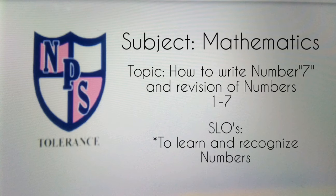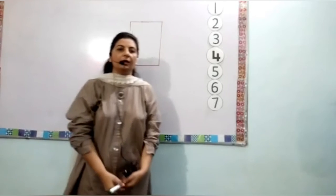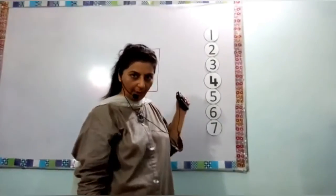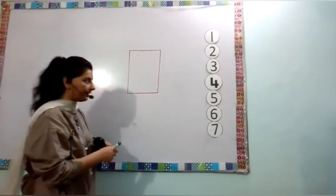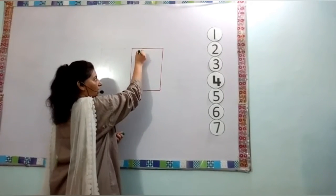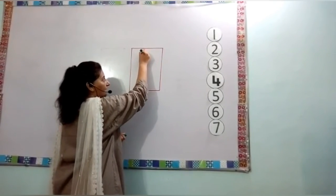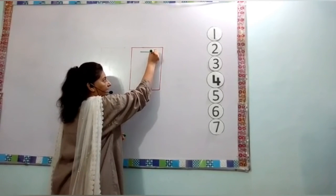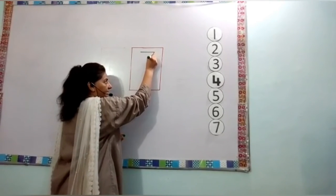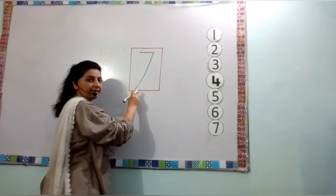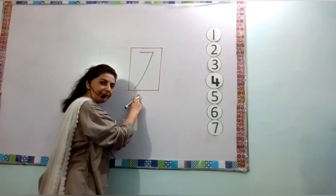Subject Mathematics. Topic: How to Write Number 7 and Revision of Numbers. Now how to write number 7 in a block. Look at here. To write number 7, starts from the top. Make a draw a sleeping line, then draw a diagonal line down to the bottom. This is the number 7.